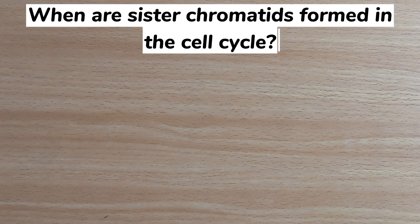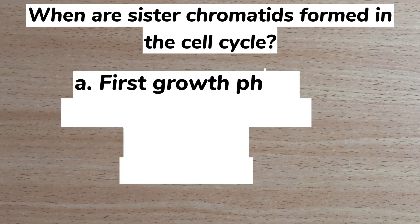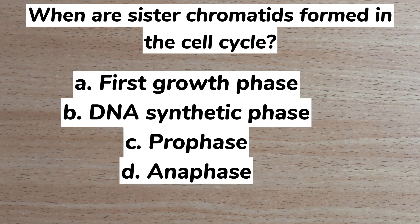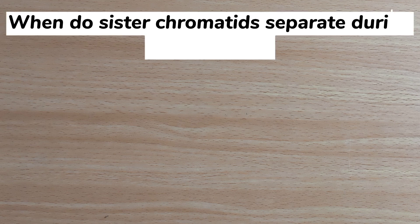Number 6. When are sister chromatids formed in the cell cycle? A first growth phase, B DNA synthetic phase, C prophase, D anaphase. Answer: B DNA synthetic phase.